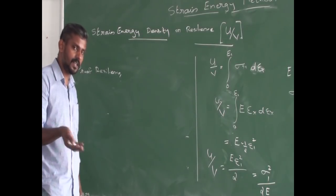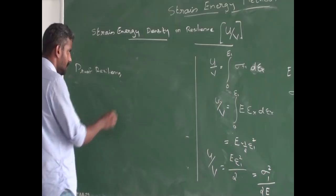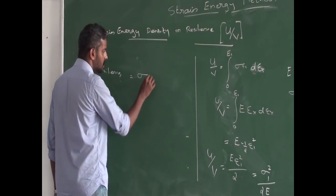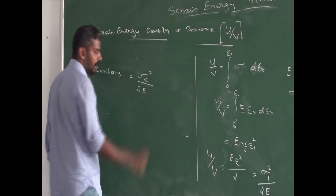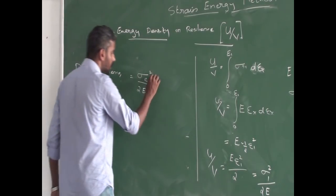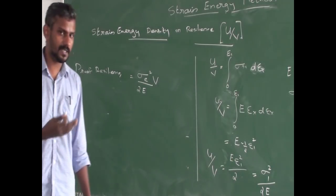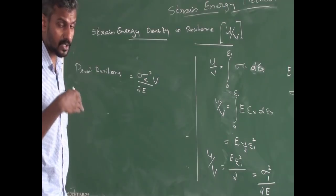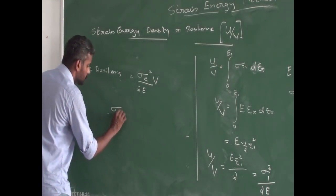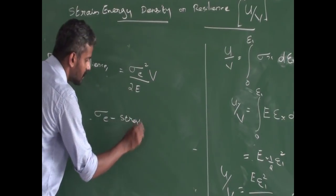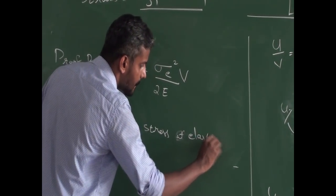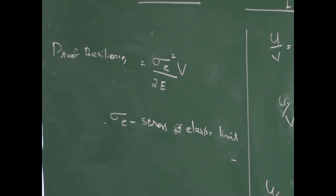The strain energy density expression is σ₁² divided by 2E. At the elastic limit, σ₁ is replaced by σₑ — the stress corresponding to the elastic limit, or the elastic stress. This is the proof resilience expression. Thank you.